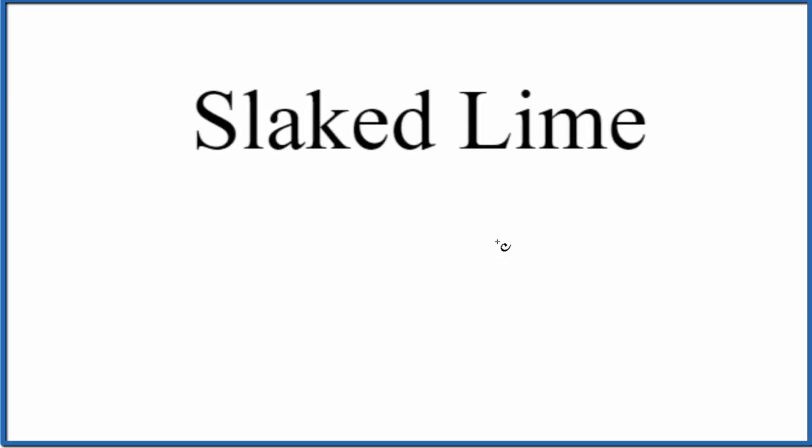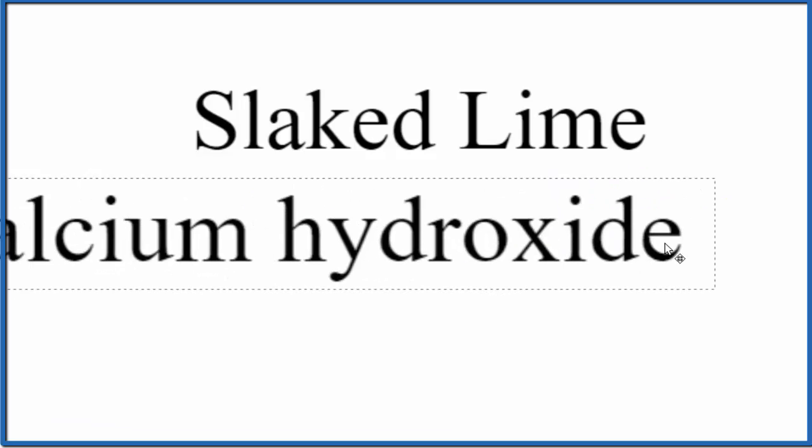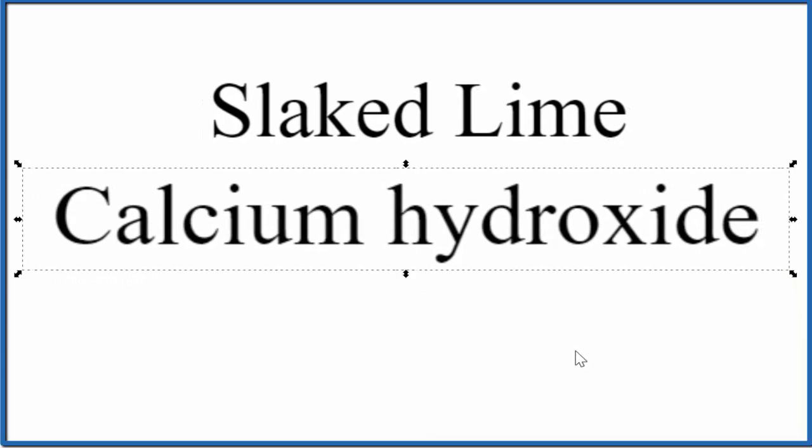So if you want to write the chemical formula for slaked lime, you first have to know the chemical name. Slaked lime is called calcium hydroxide. That's the chemical name.